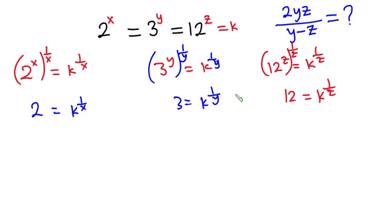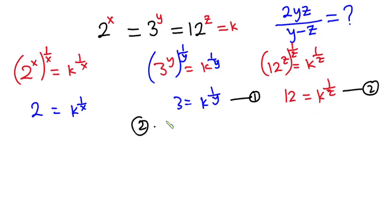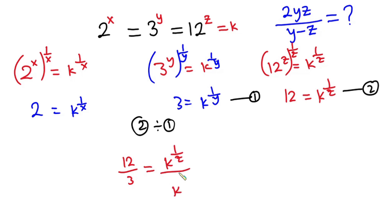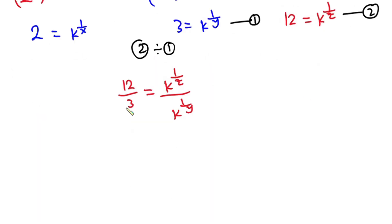I'm going to call the second expression equation 1 and the third expression equation 2. Now from these two equations, I'm going to divide equation 2 by equation 1. So we have 12 over 3 is equal to k to the power 1 over z, over k to the power 1 over y.